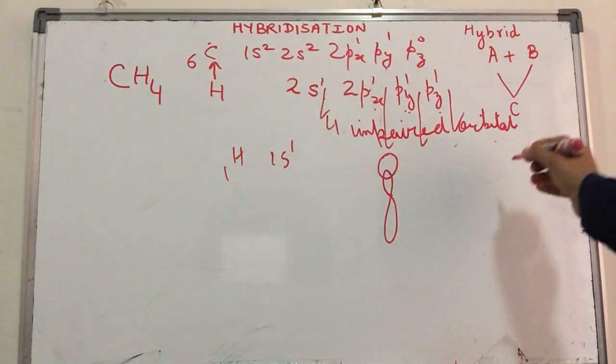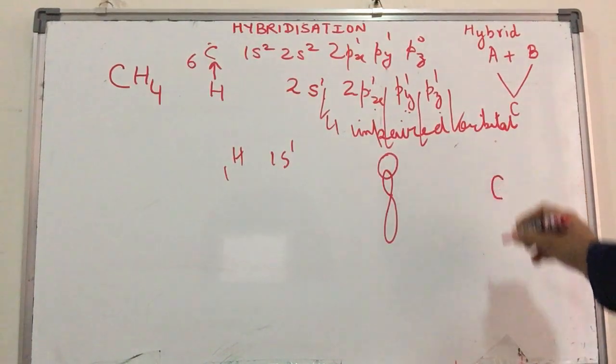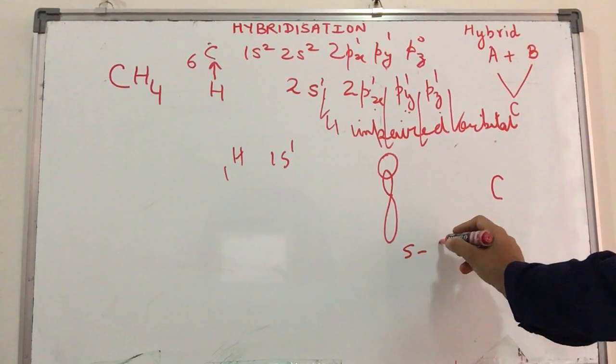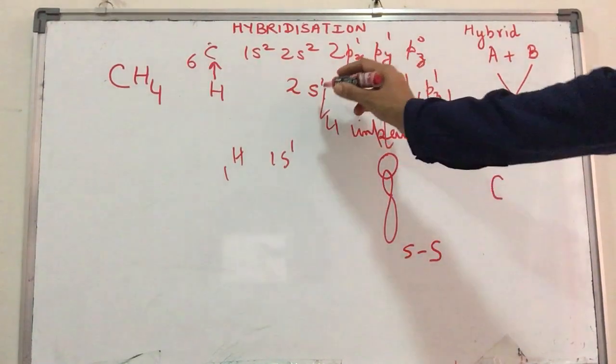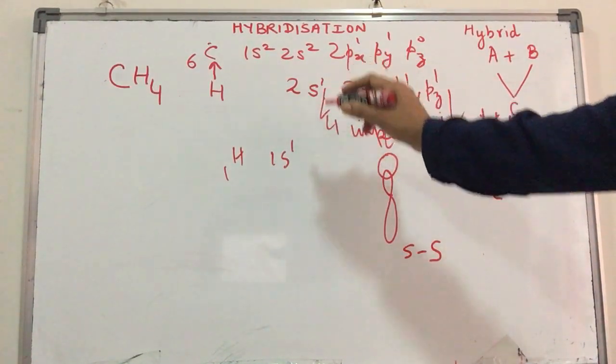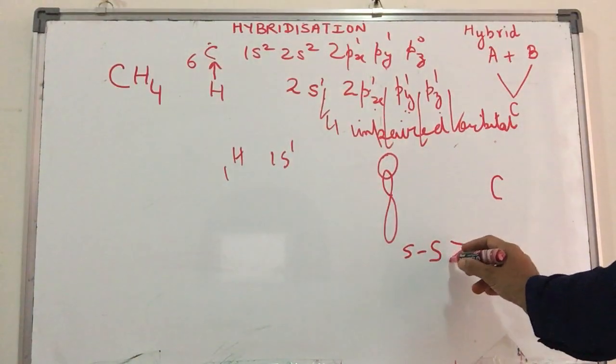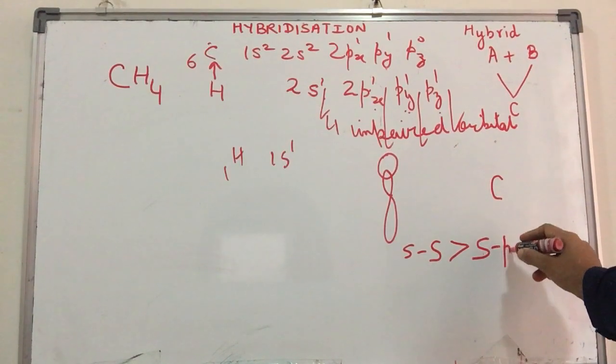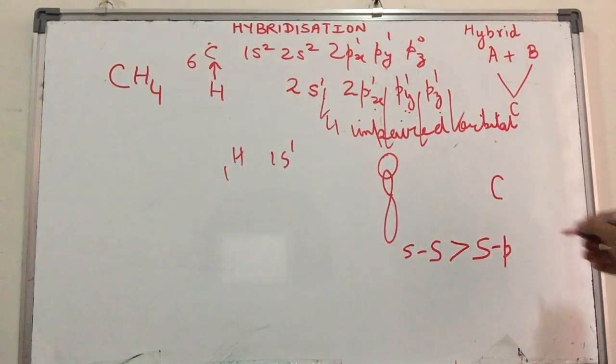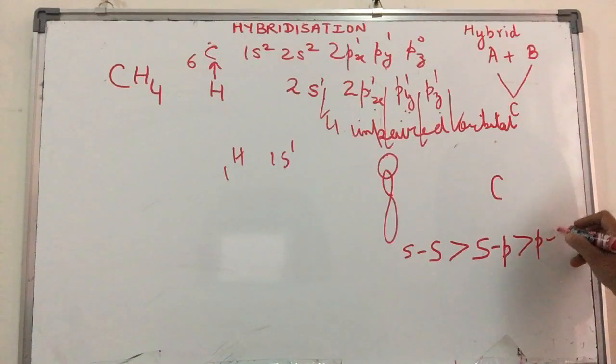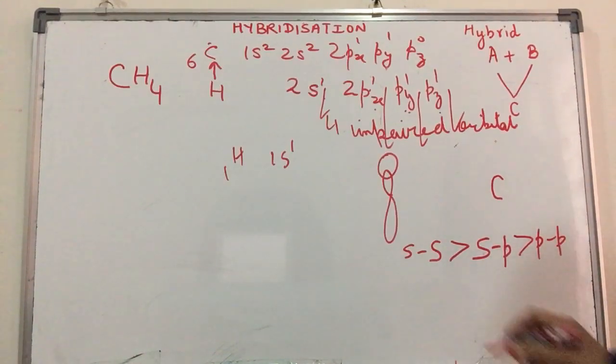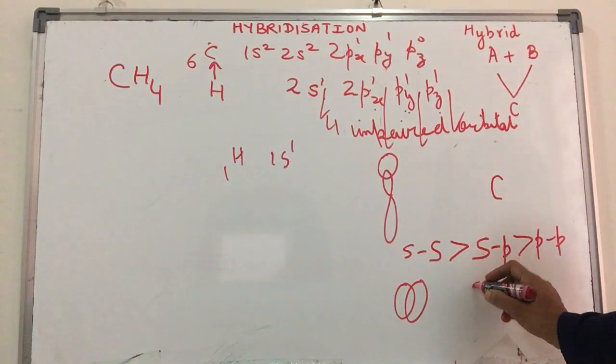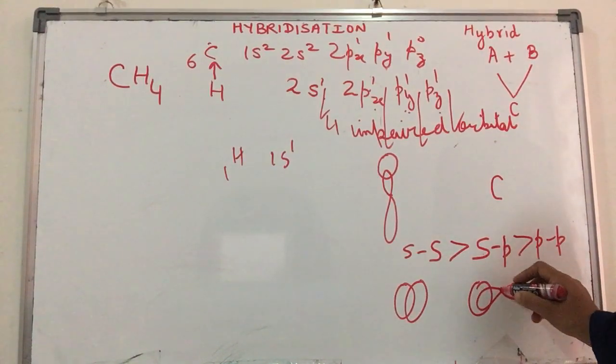Accordingly, in the case of methane, since there's an SP overlap and an SS bond, a bond formed between two S atomic orbitals is stronger than a bond between S and P overlapping, which is stronger than PP overlap. The logic is clear: more the extent of overlap, stronger is the bond.